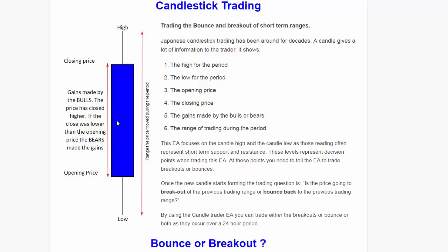Knowing this, I've basically written an EA. It's pretty simple: when a new candle is formed it looks at the previous candle, and when price reaches the high it will decide whether to buy or sell at that point, or when it reaches the low it will decide whether to buy or sell. So the question is: when do you trade a bounce and when do you trade a breakout? That's the key decision this EA makes.